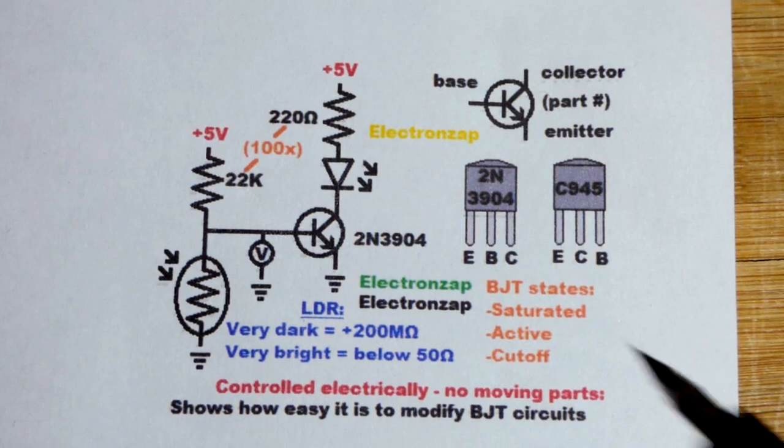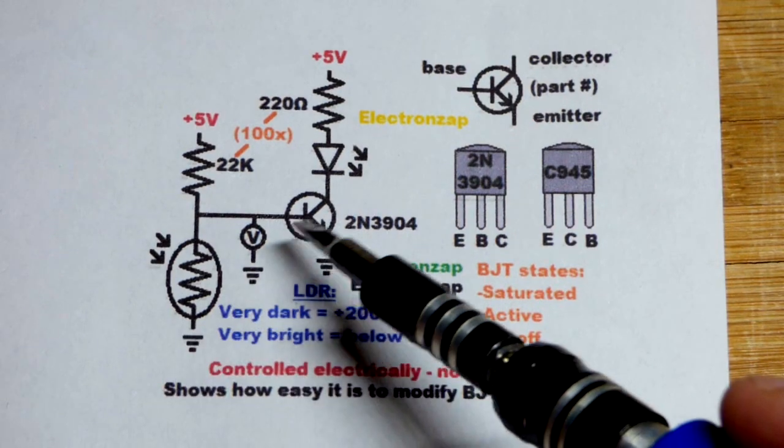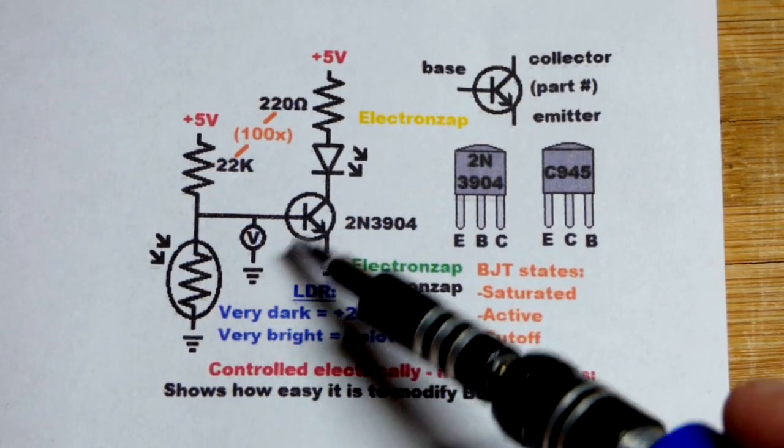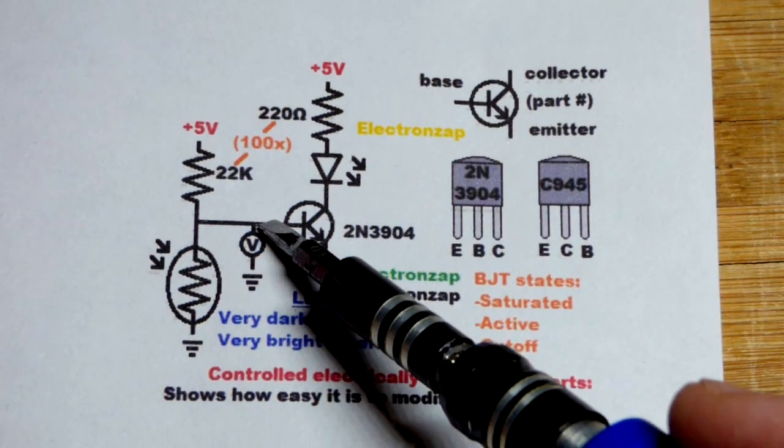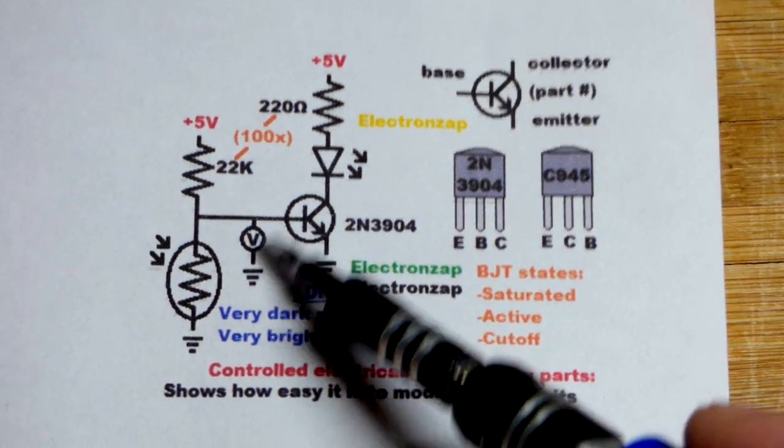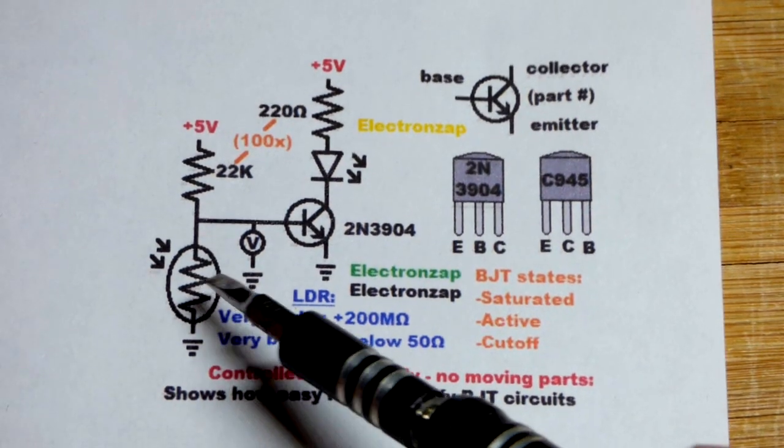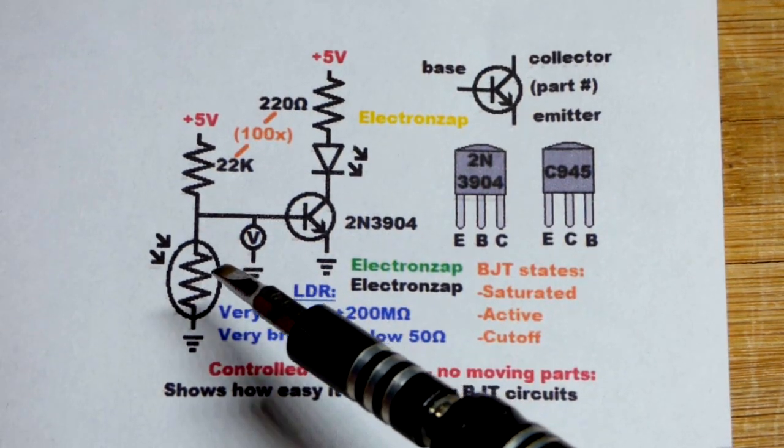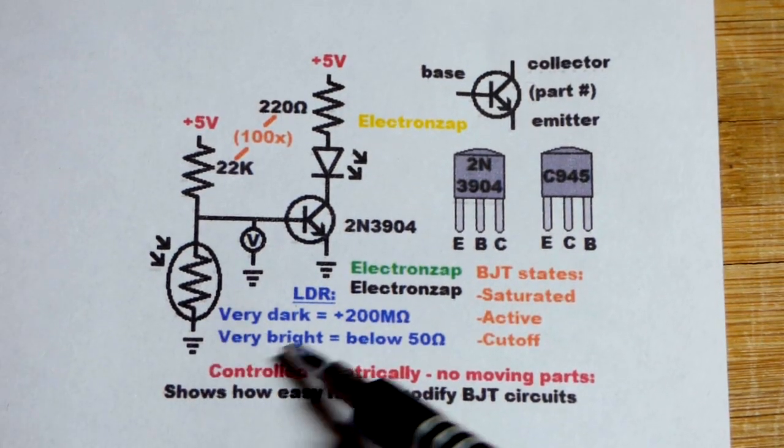And so here we have a schematic diagram of the circuit. I'll try to go quick, because we've talked about switch circuits for the bipolar junction transistor quite a bit lately. I did not measure the voltage of the base in relationship to ground, but that voltage, of course, is important. First off, let's talk about when there is a bright light, or bright enough light, I should say, on the light-dependent resistor.